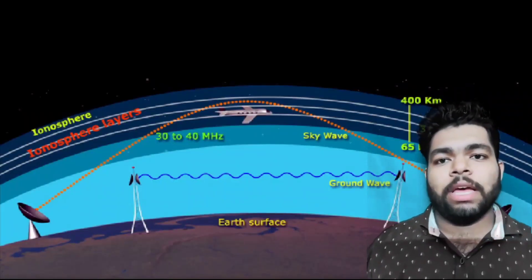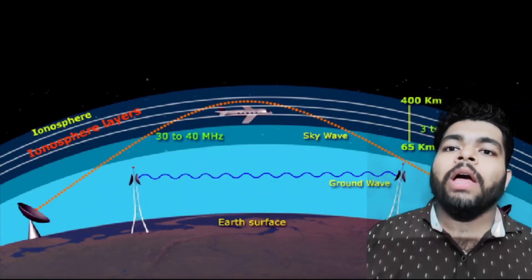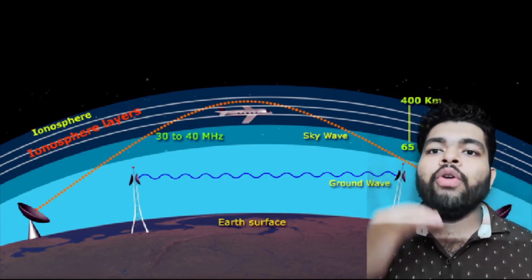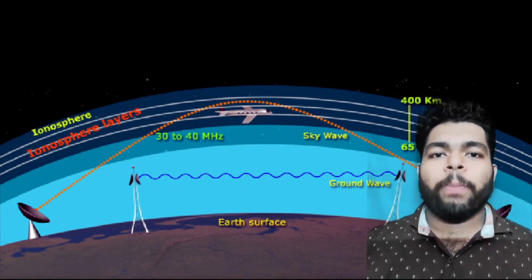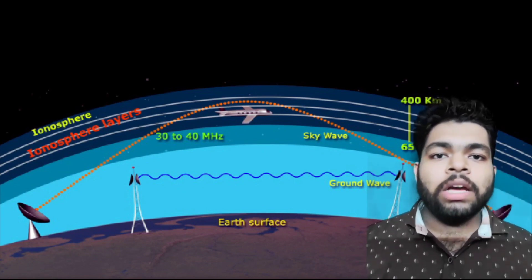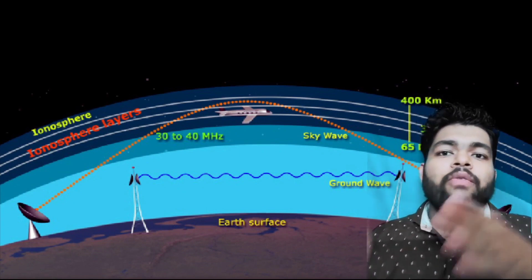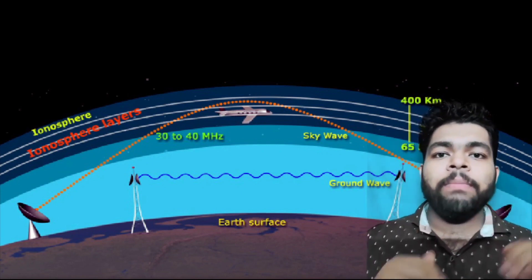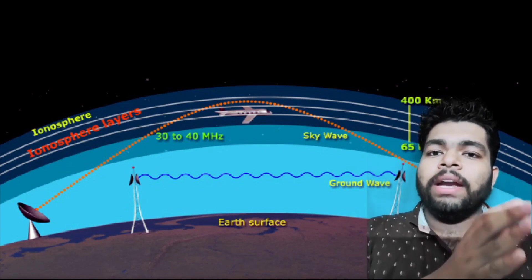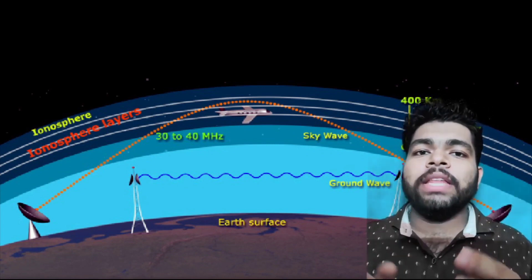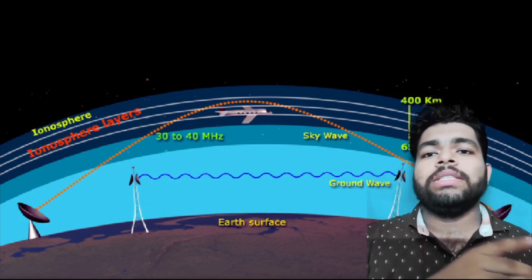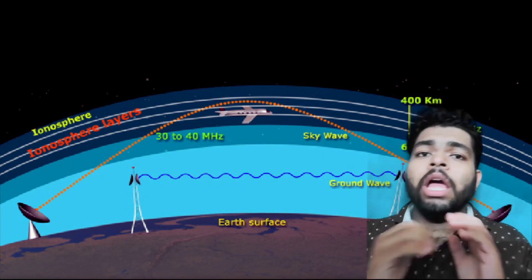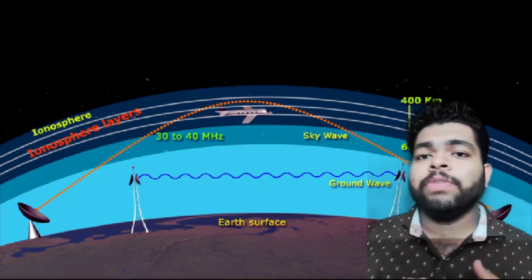Radio propagation is the way radio waves travel or propagate when they are transmitted from one point to another point, affected by the medium in which they travel, and particularly the way they propagate around the Earth in various parts of the atmosphere.